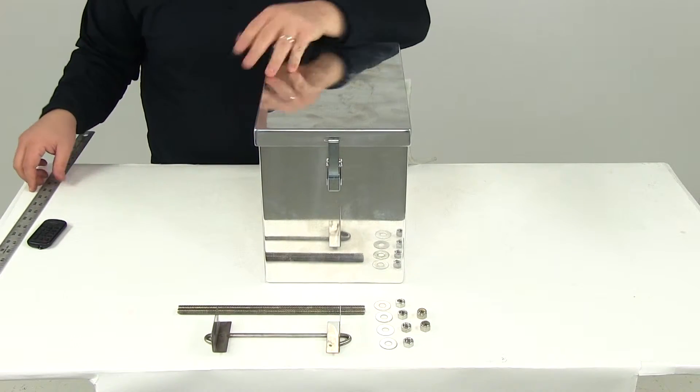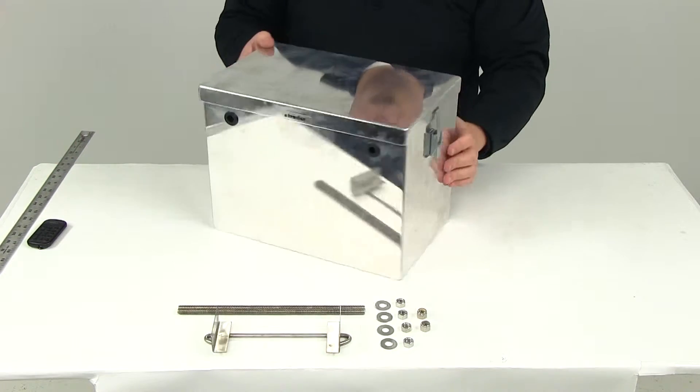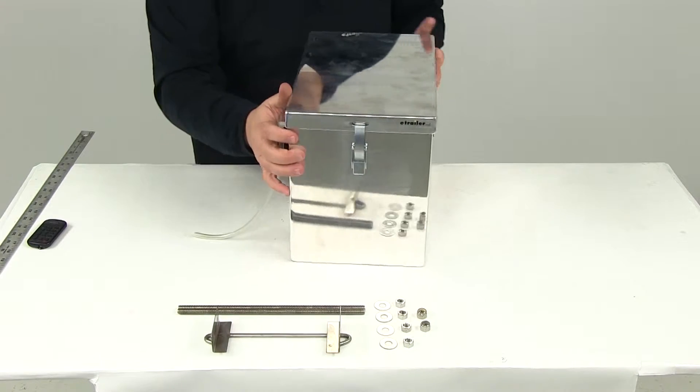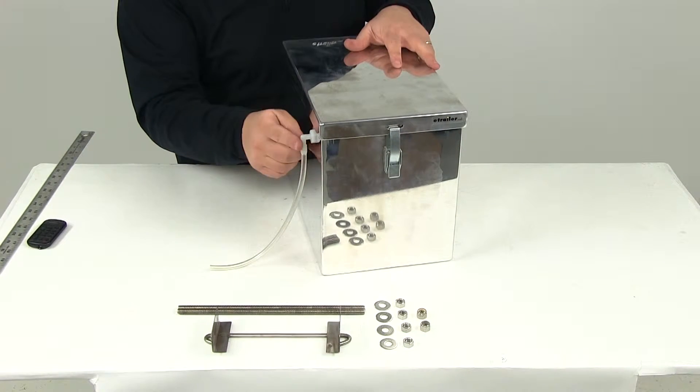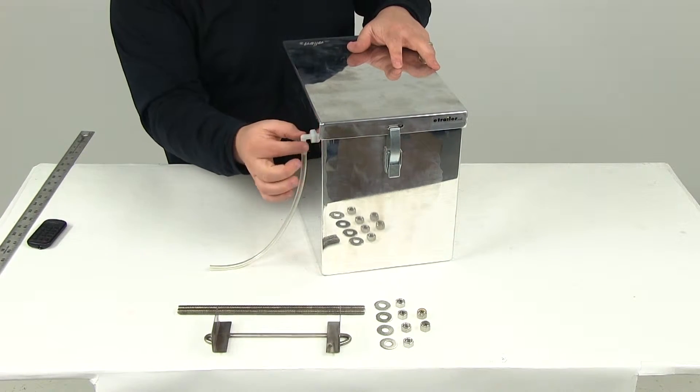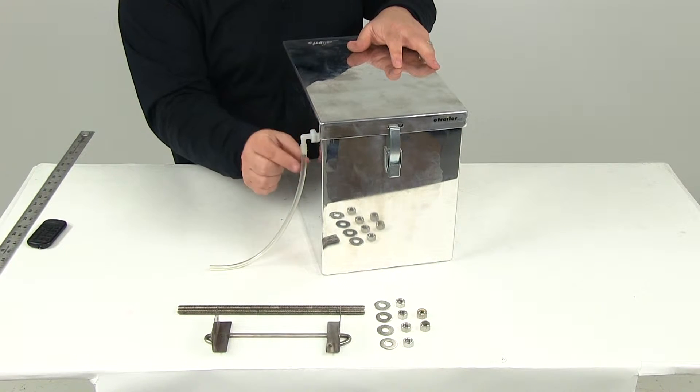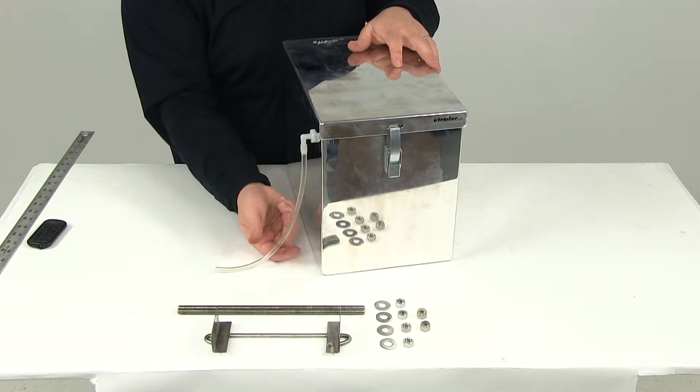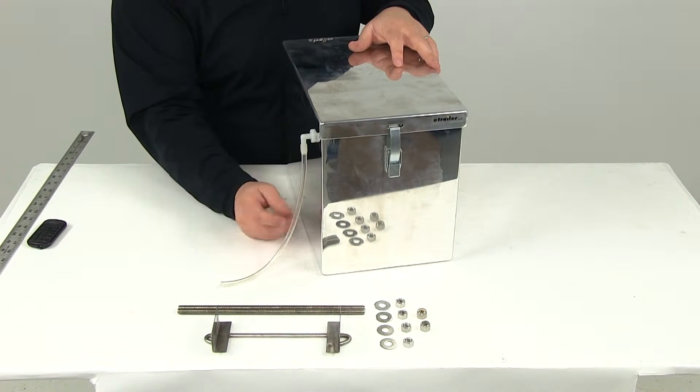Now those are the outer dimensions. Real quick I just want to go over a few features of the box. Here on this side it features one hole. This is to fit your 90 degree elbow as well as the PVC hose. This is going to act as a drain system or ventilation system.